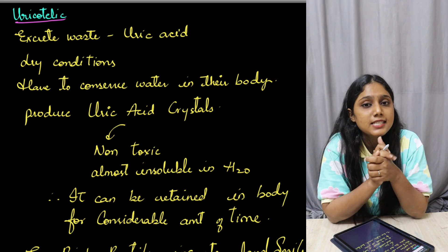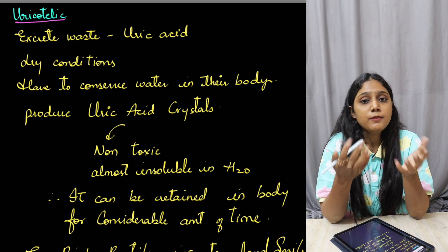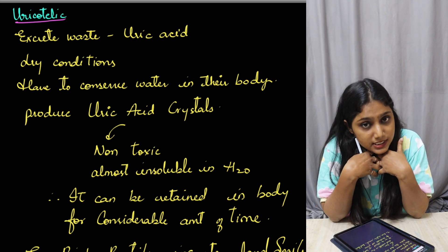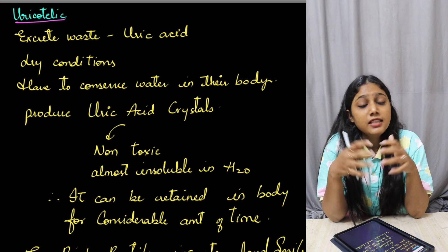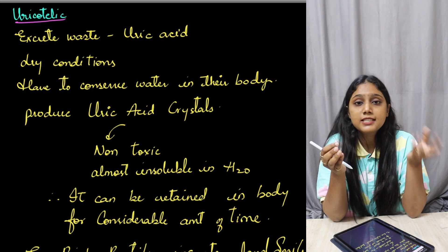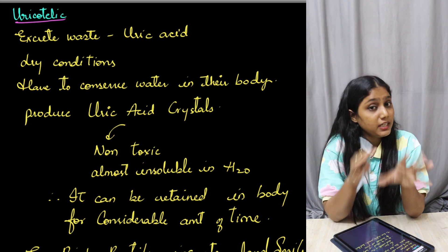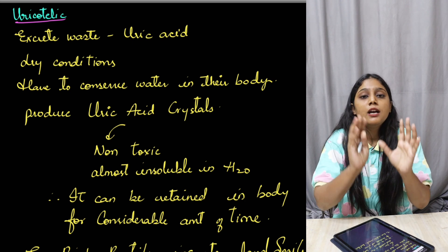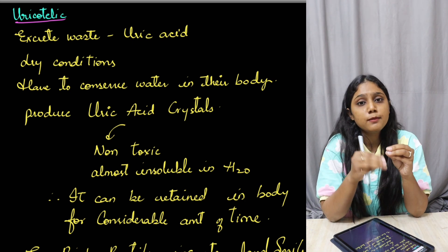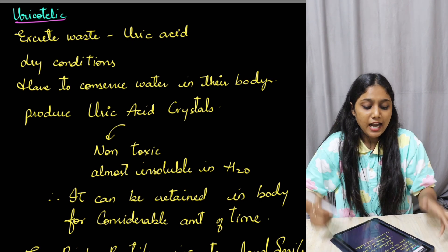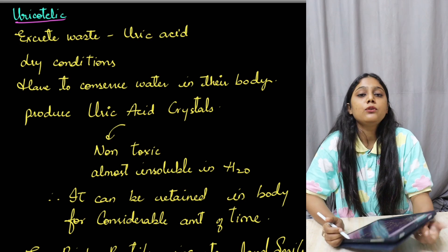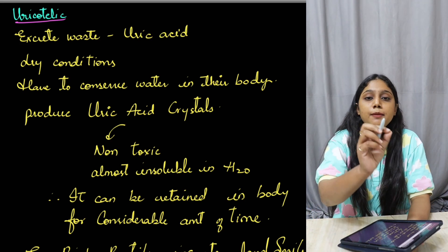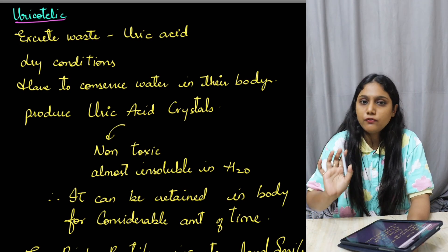Which animals excrete uric acid? Those animals that live in dry environments and need to conserve water in their bodies. They simply cannot afford to lose water — since urea excretion still requires a fair amount of water, animals that can only afford to lose very little water will excrete uric acid instead.